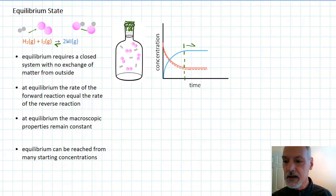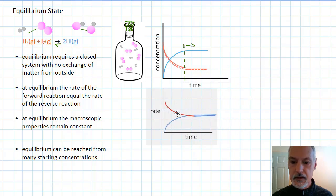We are still making product and product is turning back into reactant at the same rate. If we look at a graph of that situation, it would look something like this, where at equilibrium, this point in time here on this graph, this is where the two rates match each other. So the reaction is still happening, but the properties aren't changing.